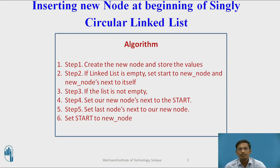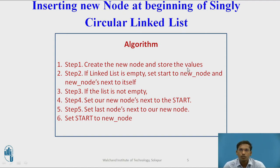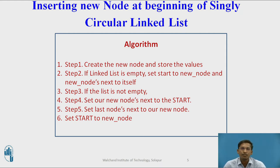Now we will see an algorithm for inserting a new node at the beginning of a singly circular linked list. Step one: create the new node and store the values. Whenever you insert a new node, the first task is to allocate memory for the new node and store the desired value in its data part.